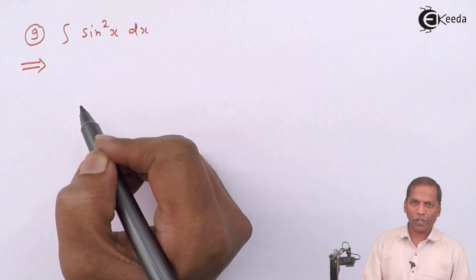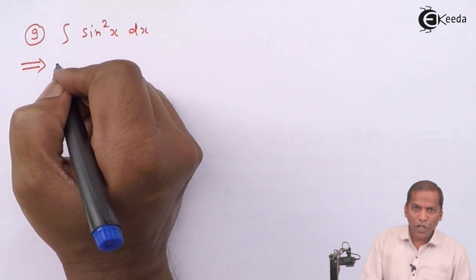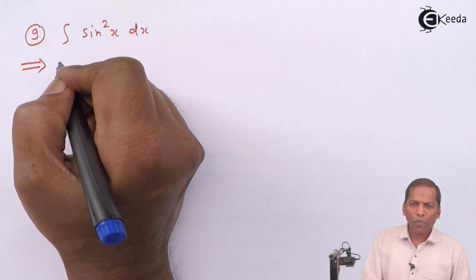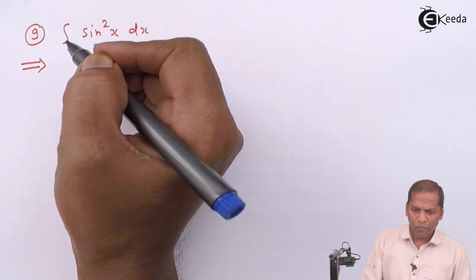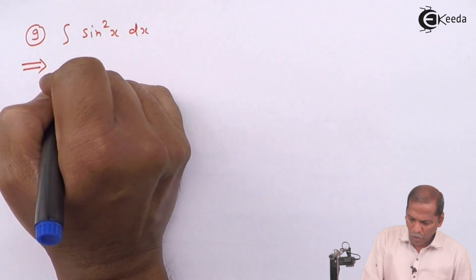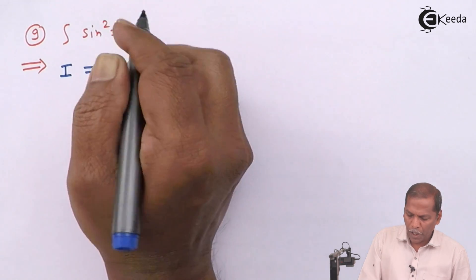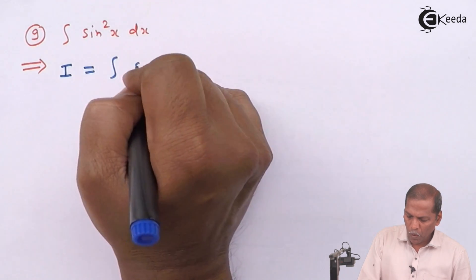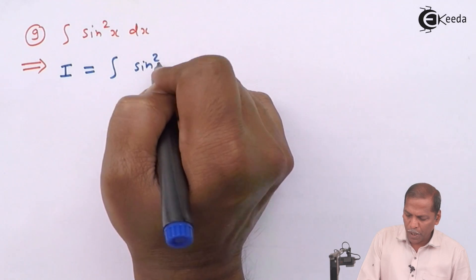Now let's see the solution. First of all, we denote the given problem as I, that is I equal to integral sine square x dx.